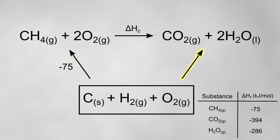On the other arrow, I'm going to put the formation enthalpies for the products. The enthalpy of formation for carbon dioxide is minus 394 kJ per mole, and the enthalpy of formation for water is minus 286 kJ per mole.